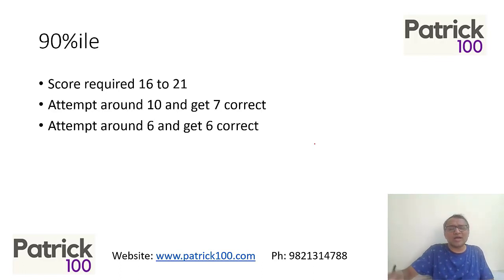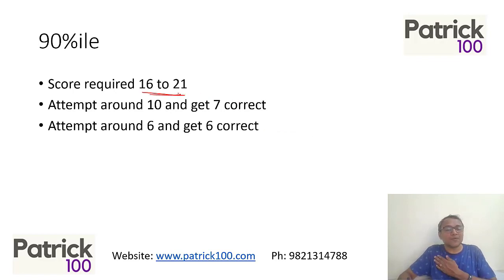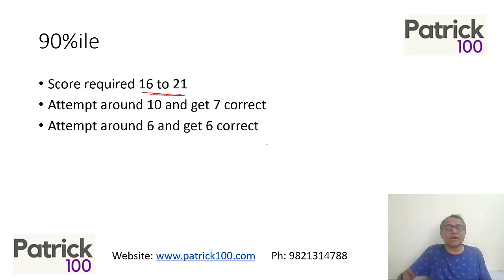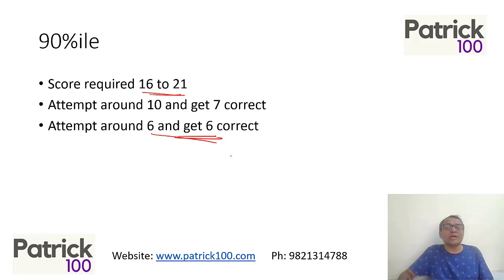If I look at DILR, a score of 16 to 21 would give you 90 percentile. How do you score that? Last year, if you scored five out of five correct you got 90 percentile. But normally, looking at the range, around six correct out of six attempts — 18 marks — would get you around that percentile. Or maybe around 10 attempts across two sets, getting seven of them correct, would still get you 90 percentile.